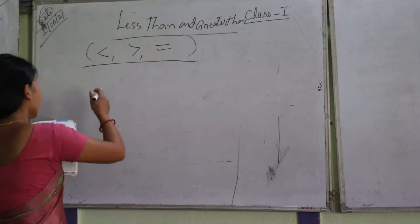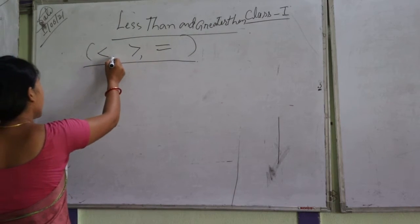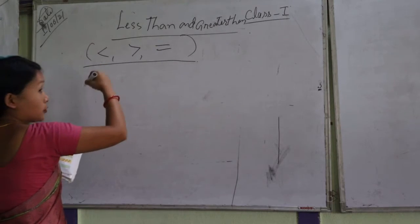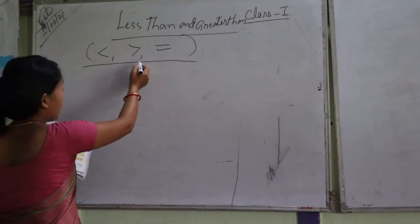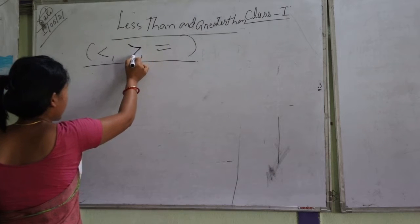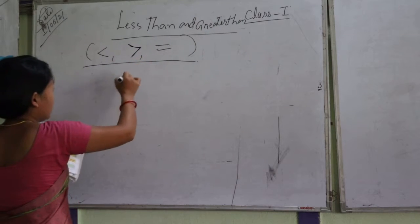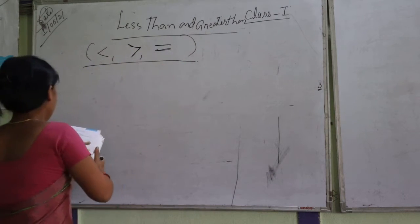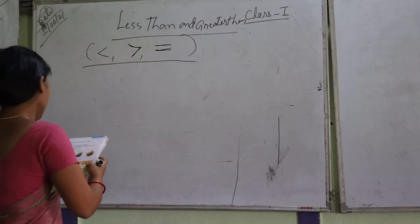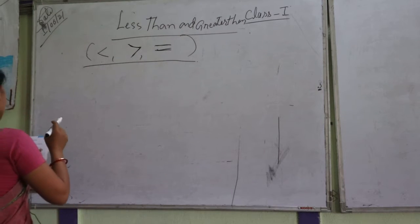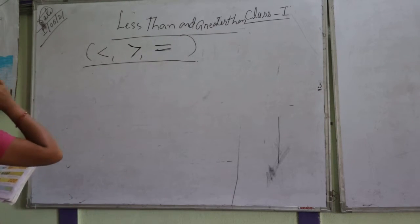What is this symbol? What is this symbol? This symbol is less than. What is next? What is this symbol? Greater than. What is this symbol? Equal. This symbol is less than and greater than.